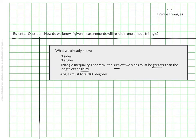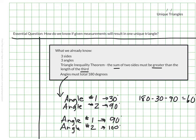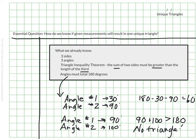Let's talk about the angles. If angle one is 30 degrees and angle two is 90 degrees, I can figure out what angle three should be — it's 180 minus 30 minus 90, which means the third angle must be 60 degrees. However, if someone tells me one angle is 90 degrees and another is 100, then there cannot be a triangle at all, because 90 plus 100 is already 190 degrees, which is larger than 180. So the total degrees in your triangle must add up to exactly 180 degrees.